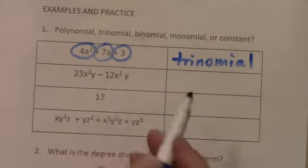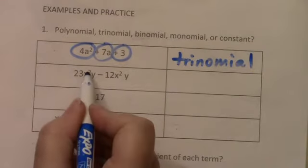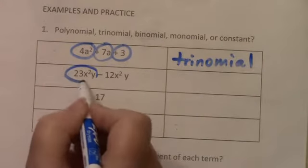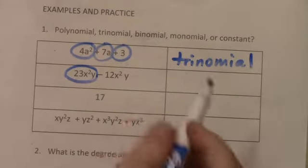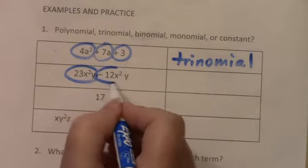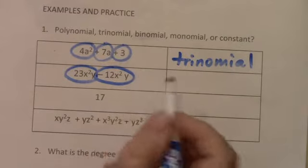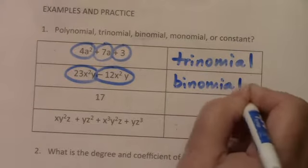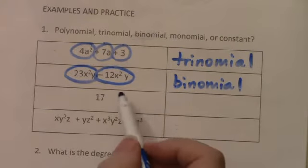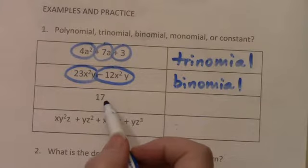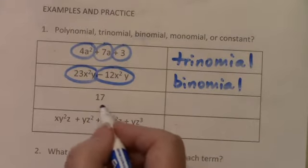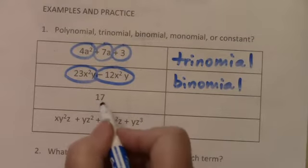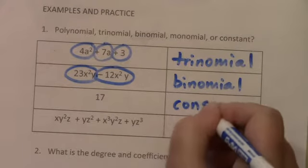This one, even though it's longer, we're not counting how many variables or exponents, but how many individual terms. Well, 23x squared y is all one term. And then the negative 12x squared y is another term. And this is two of them. So this is a binomial. Now, this is a term, but more specifically, it's a constant, because it has no variable following it. It's constantly 17. No matter what we do with this, this is always 17. It is a constant.